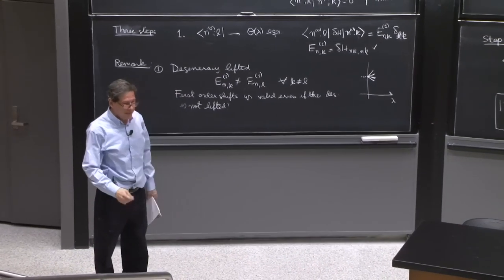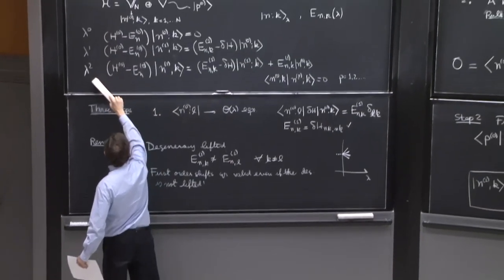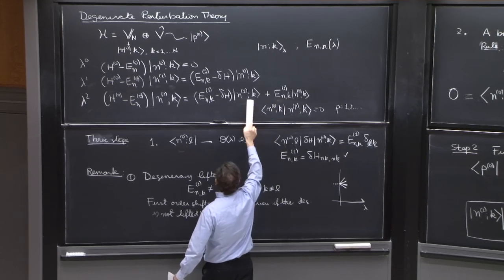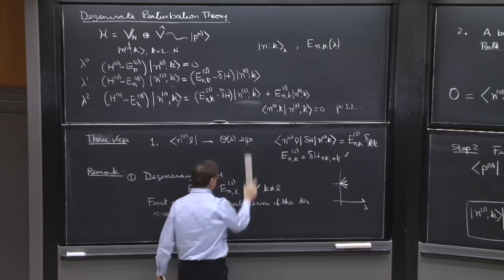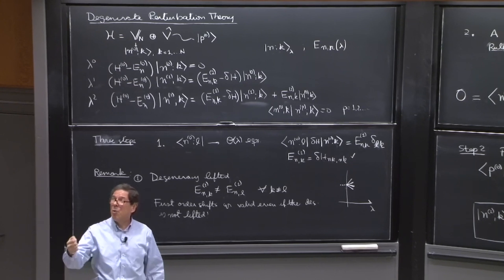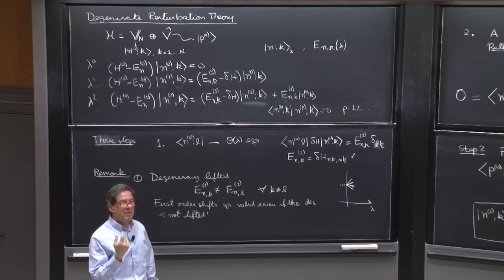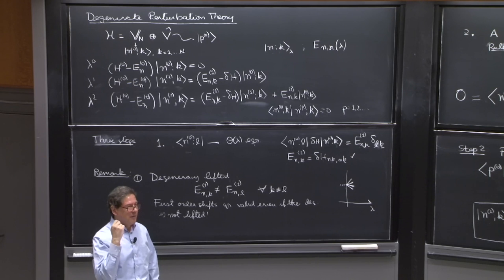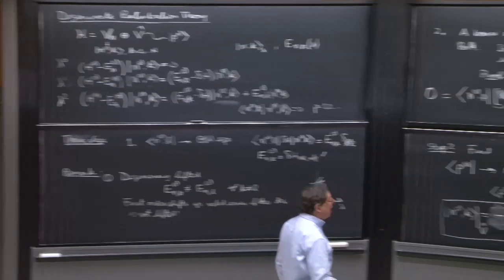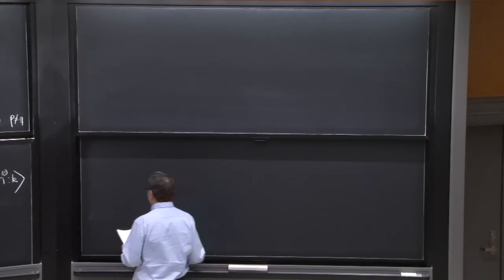So somehow it must be that the next equation — that we usually need to go to second order in energy — will tell us something about the missing part of |n1⟩. That's the surprising thing: you have to go to order lambda squared to find the first order correction to the degenerate part of the state. That's why degenerate perturbation theory is famous for its complication — you really need to go pretty high to find the things. So let's do it.